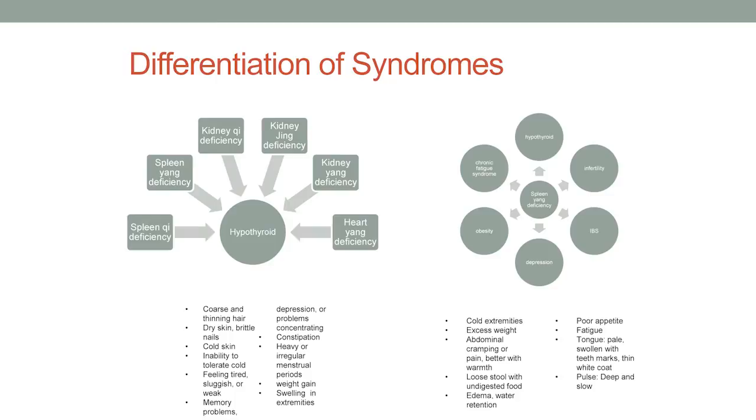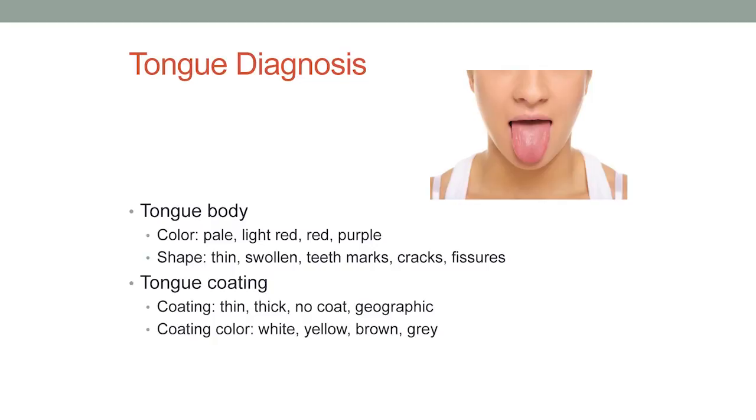Tongue diagnosis is one of the things I get asked about all the time. You're having a nice conversation and then I ask you to stick out your tongue. What am I looking at? I'm looking at the color of the tongue body, the coating, and whether there's a red tip at the end — a red tip can indicate sleep issues, paleness can indicate fatigue, and a coating can suggest digestive issues. All of these different components match up with syndromes based on the tongue.